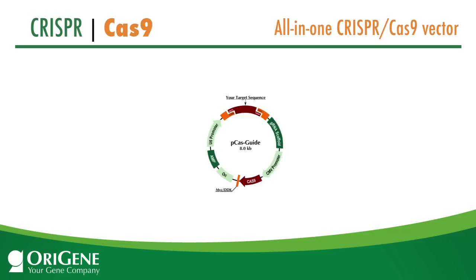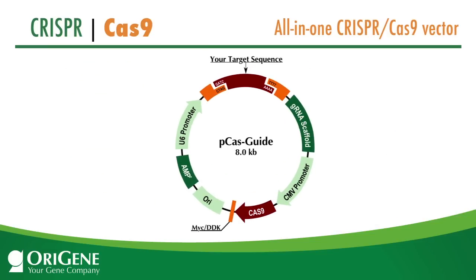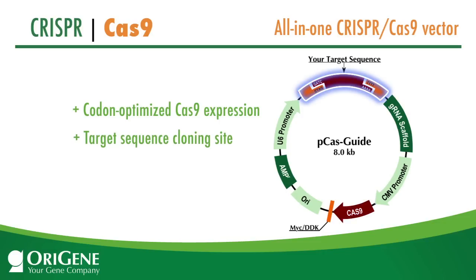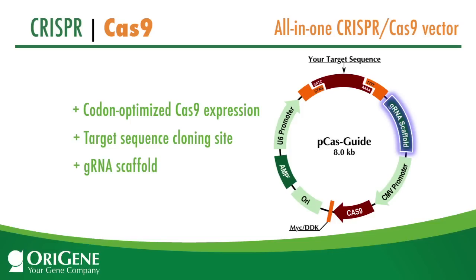Due to its amazing simplicity, CRISPR-based genome editing can be achieved with a simple transfection. AuraGene offers an all-in-one vector, P-Cas guide, engineered with all the essential elements for targeted cleavage: the codon-optimized Cas9 expression, a cloning site for the 20 nucleotide target sequence, and a gRNA scaffold downstream of the cloning site to be transcribed into a complete gRNA by a U6 promoter.